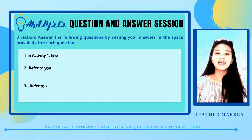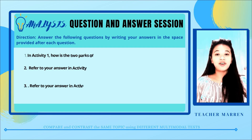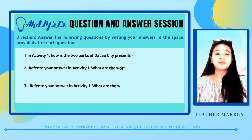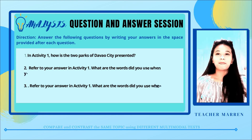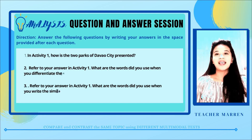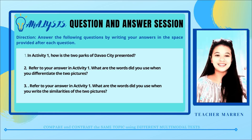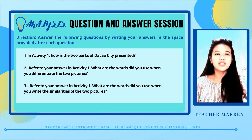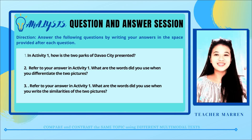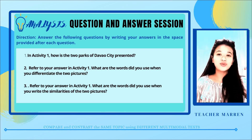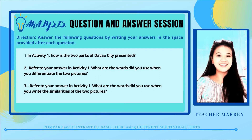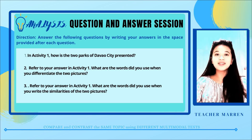For the analysis section, answer the following questions on the space provided in your worksheet. First, how are the two parks of Davao City presented? Second, referring to your answer in Activity 1, what are the words you used when you differentiated the two pictures? Third, referring to your answer in Activity 1, what are the words you used when you wrote the similarities of the two pictures?